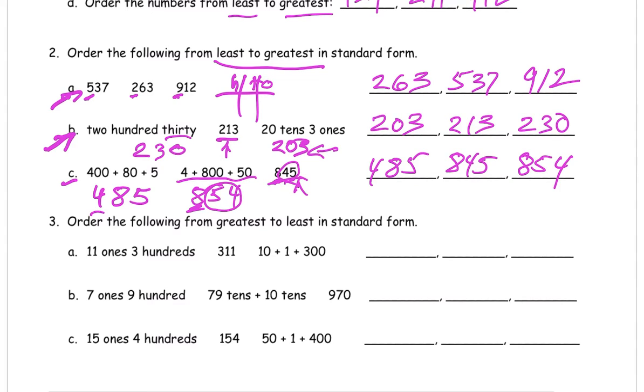And now watch out for this because I messed it up. Greatest to least. You can read it and still forget about it because you just did least to greatest twice, you know, four times in a row. And you could mess it up. So just watch out for this.